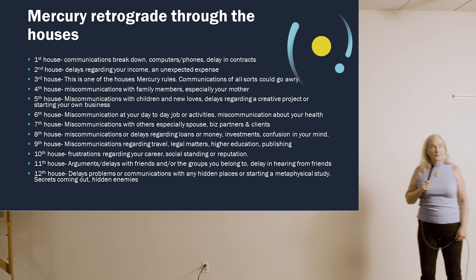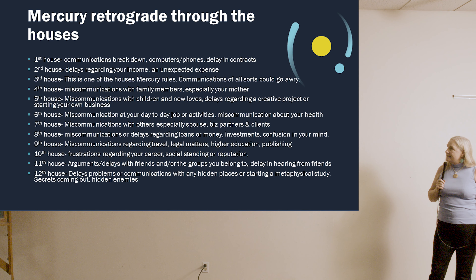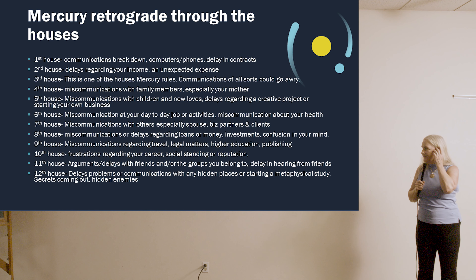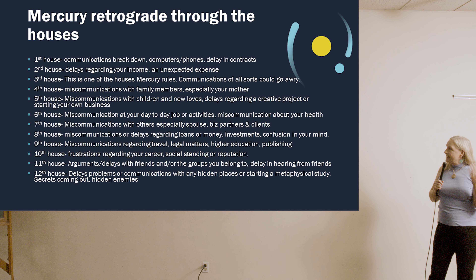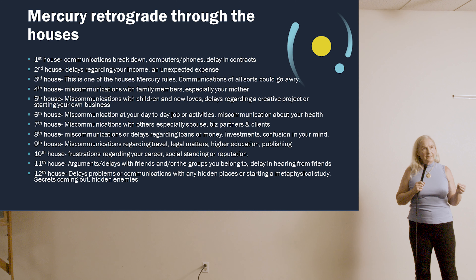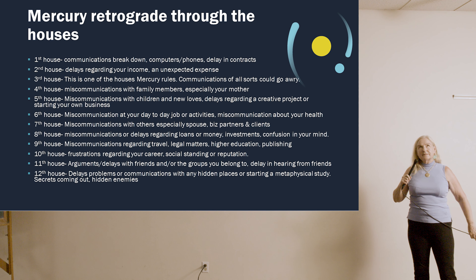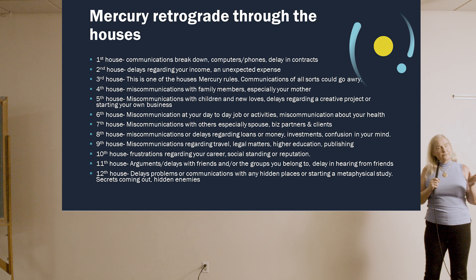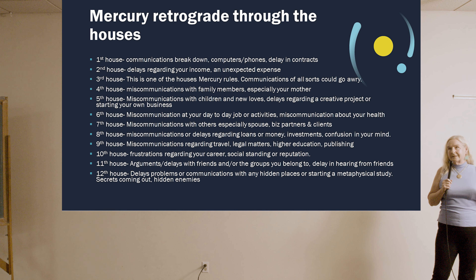The third house is one of the houses Mercury rules. It's communications itself. I regularly go through my spam folders during a Mercury retrograde in the third house — the number of times something has gone into spam from a client who really wanted to reach me. You can also have communications go awry with neighbors and siblings. The third house also governs short journeys, so it can bring confusion or delays with daily commutes — know a different route in advance if that's your situation.